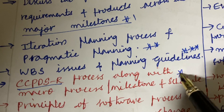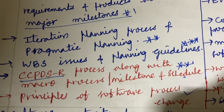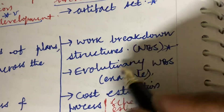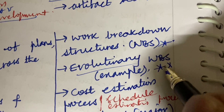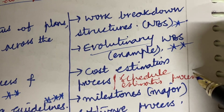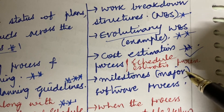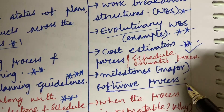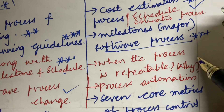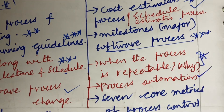CCPSDR process along with the macro process, milestones, and schedule is said to be the 11th question in the question paper. Principles of software process change, capability maturity framework, work breakdown structure, evolutionary work breakdown structure with examples, cost estimation process, and schedule estimation process are all said to be top most questions. Major milestones for software process is a three-mark question, and when the process is repeatable and why is a two-mark question.